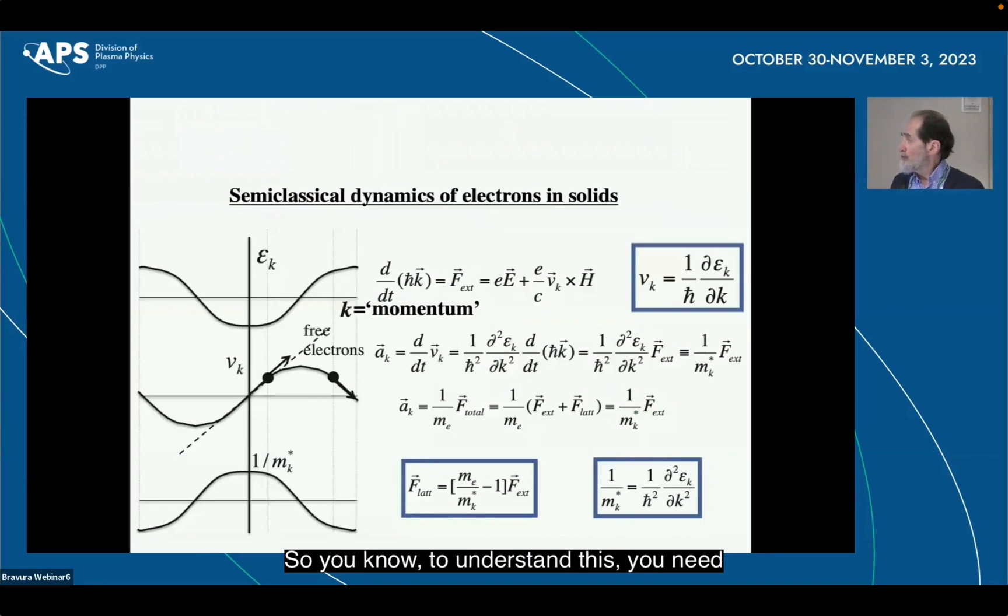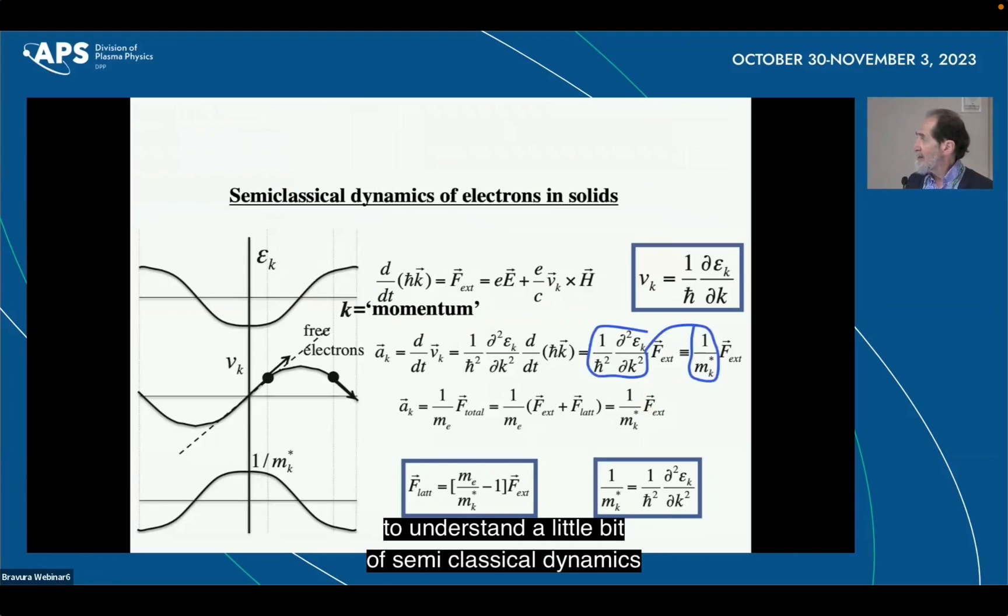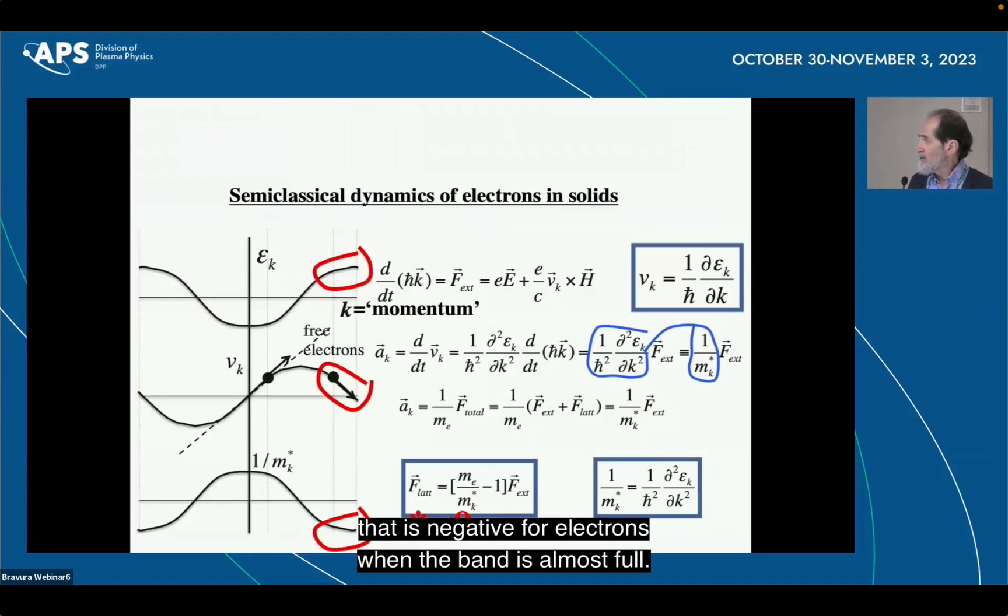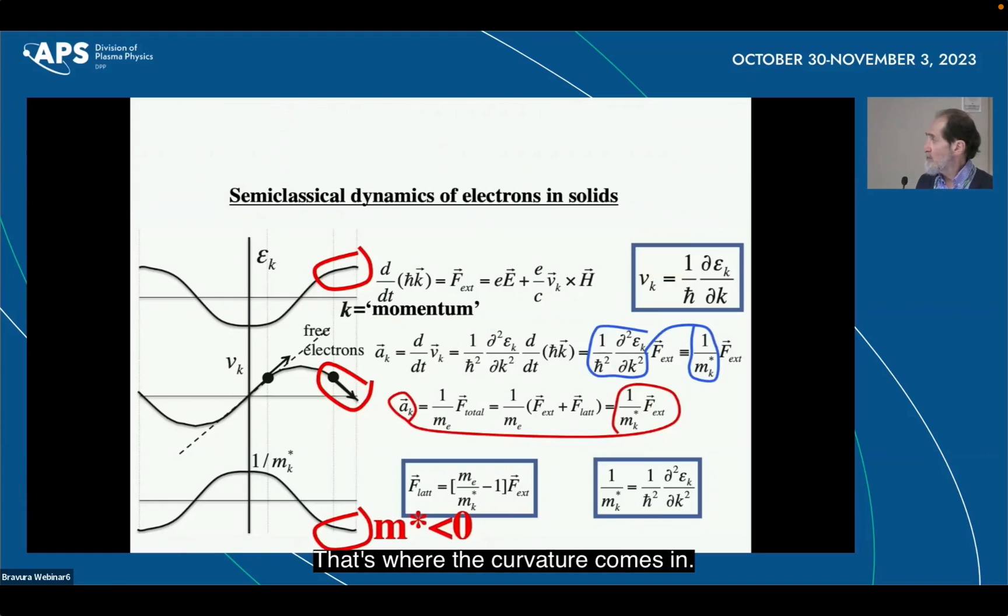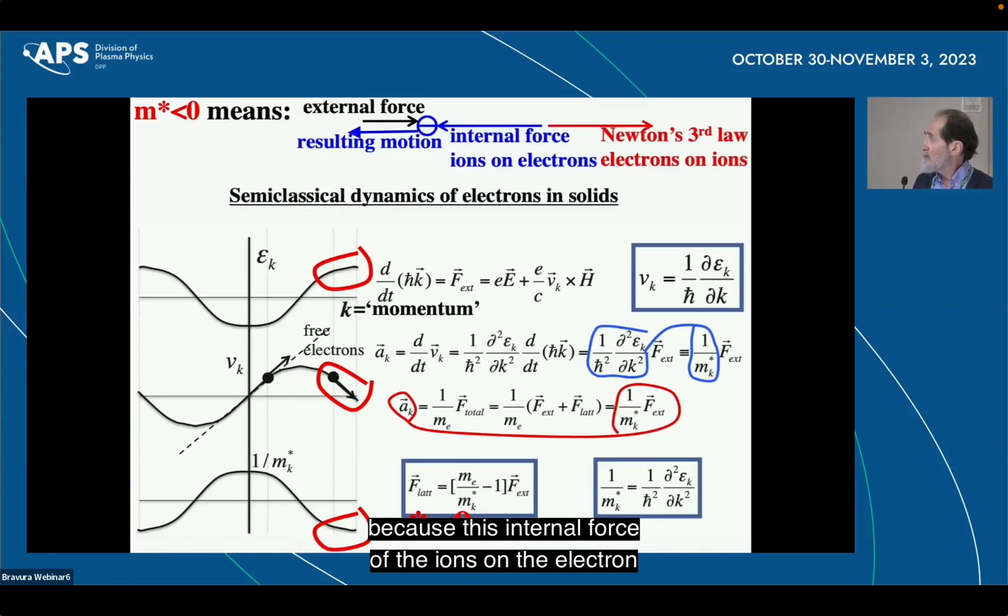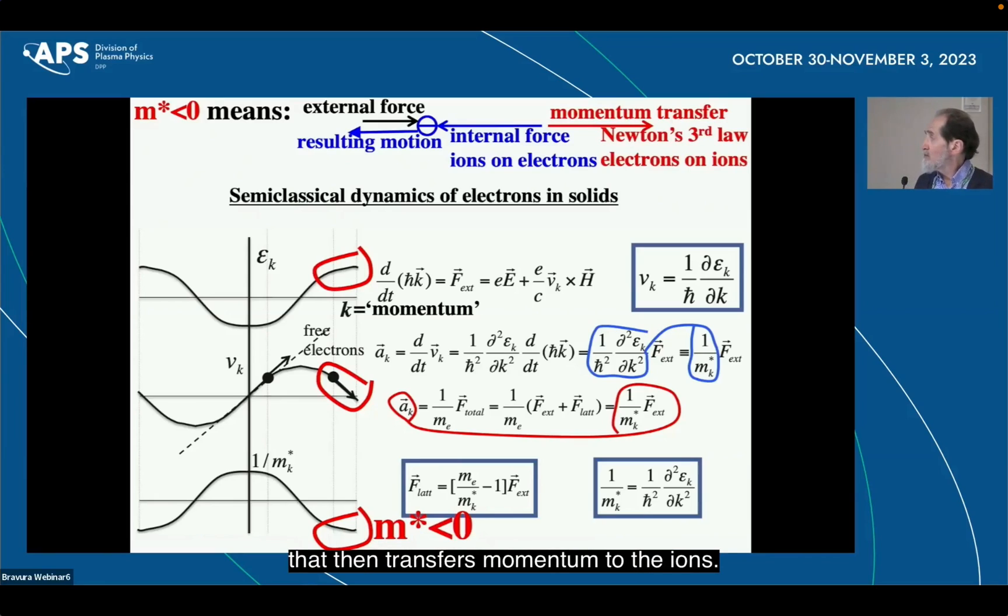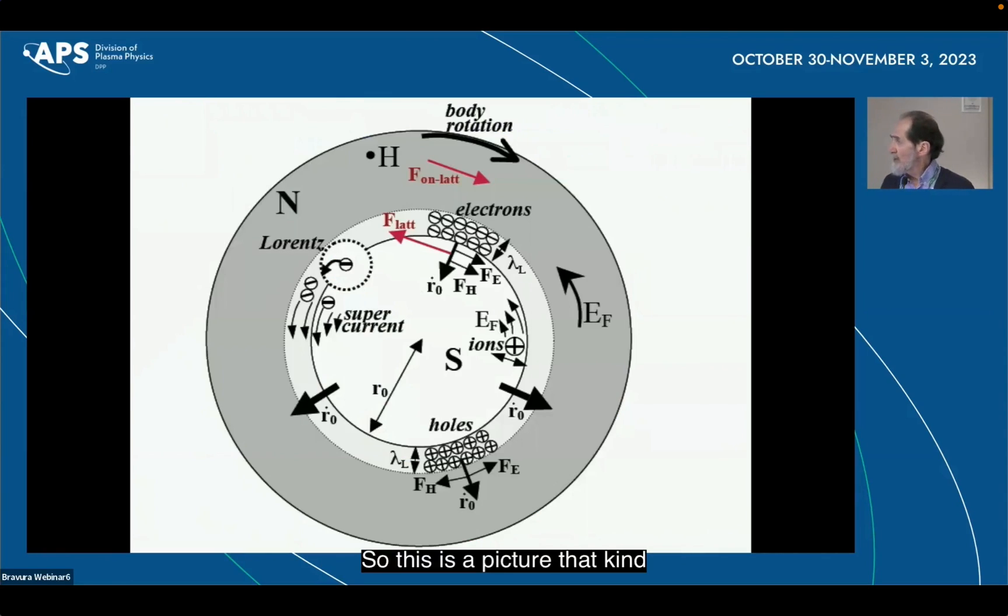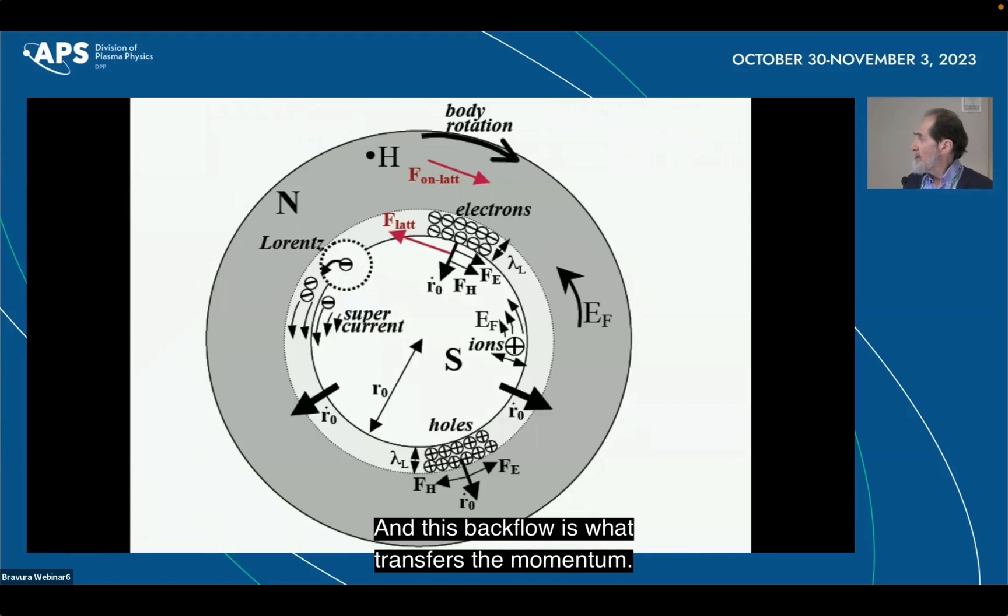So, you know, to understand this, you need to understand a little bit about semi-classical dynamics of electrons in solids, the concept of effective mass that is negative for electrons when the band is almost full. That's where the curvature comes in. The physics is that you push an electron in one direction. It moves in the opposite direction because of this internal force of the ions on the electron that then transfers momentum to the ions. And that's why you need these holes. So this is a picture that kind of shows the process in a little more detail, how the boundary expands and the electrons acquire this velocity through the Lorentz force. And this backflow is what transfers the momentum.